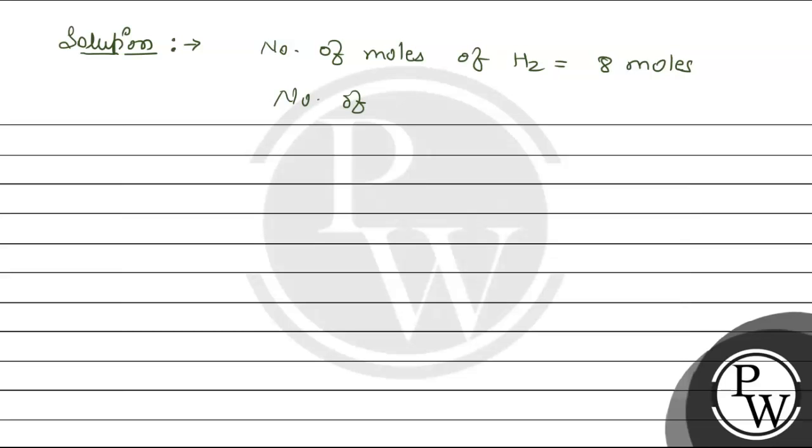Then the number of moles of oxygen is 4 moles. The total number of moles is 8 plus 4, which equals 12.